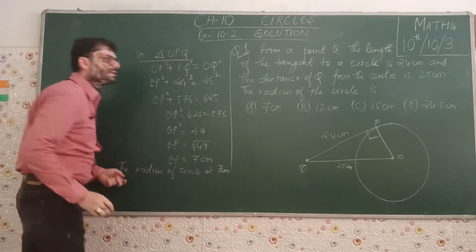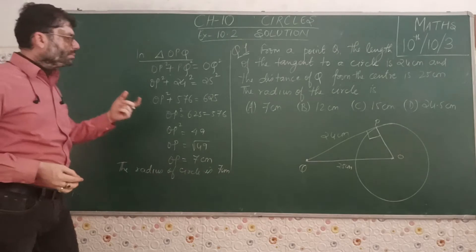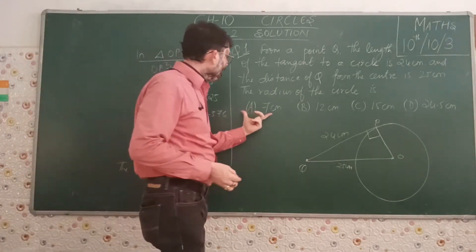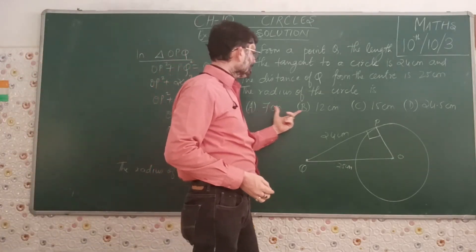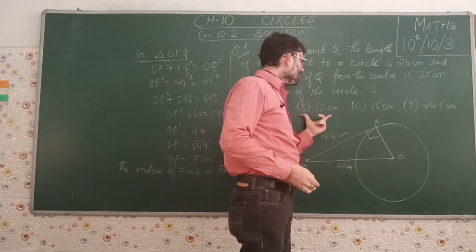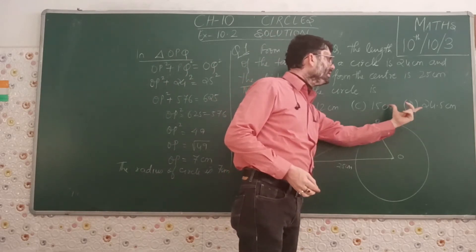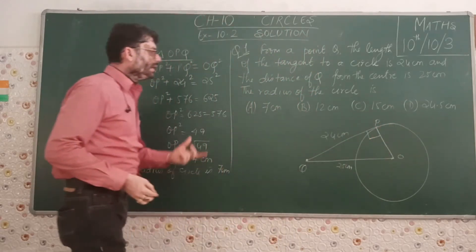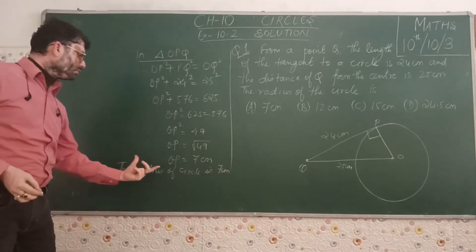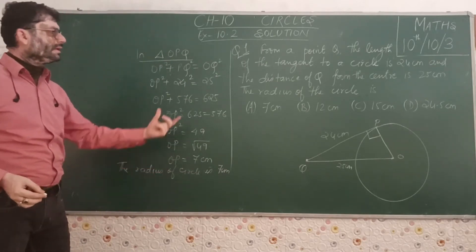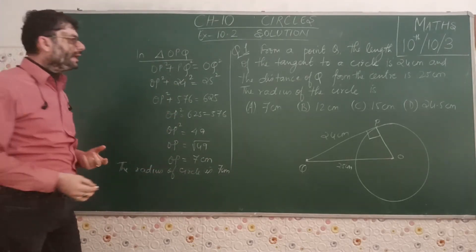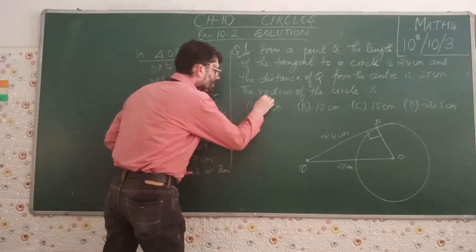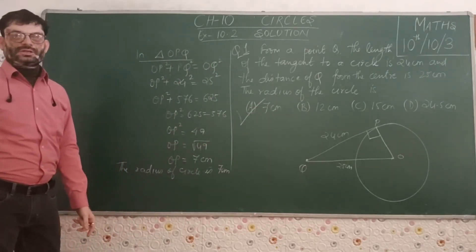Since this was an MCQ question, observing the options given: A) 7 cm, B) 12 cm, C) 15 cm, D) 24.5 cm. We have found the radius of the circle to be 7 cm, which comes under option A. So option A is correct.